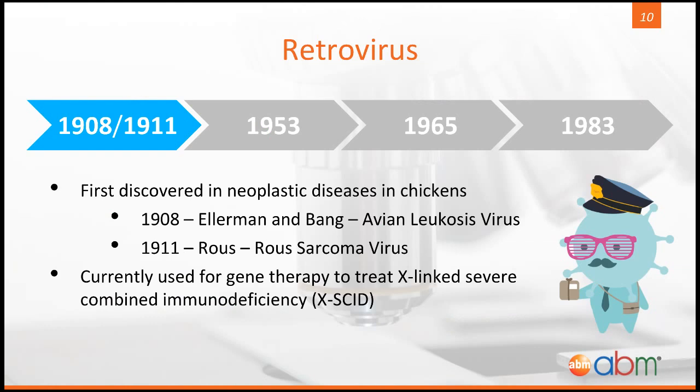The first vector we'll discuss is the retrovirus, which was discovered independently in 1908 and 1911 by Ellermann and Bang and Roos, respectively. Retroviruses were first discovered in chickens, and at present, they are currently being used to treat X-linked severe combined immunodeficiency, a disorder in which the body produces a minimal amount of T cells and NK cells.